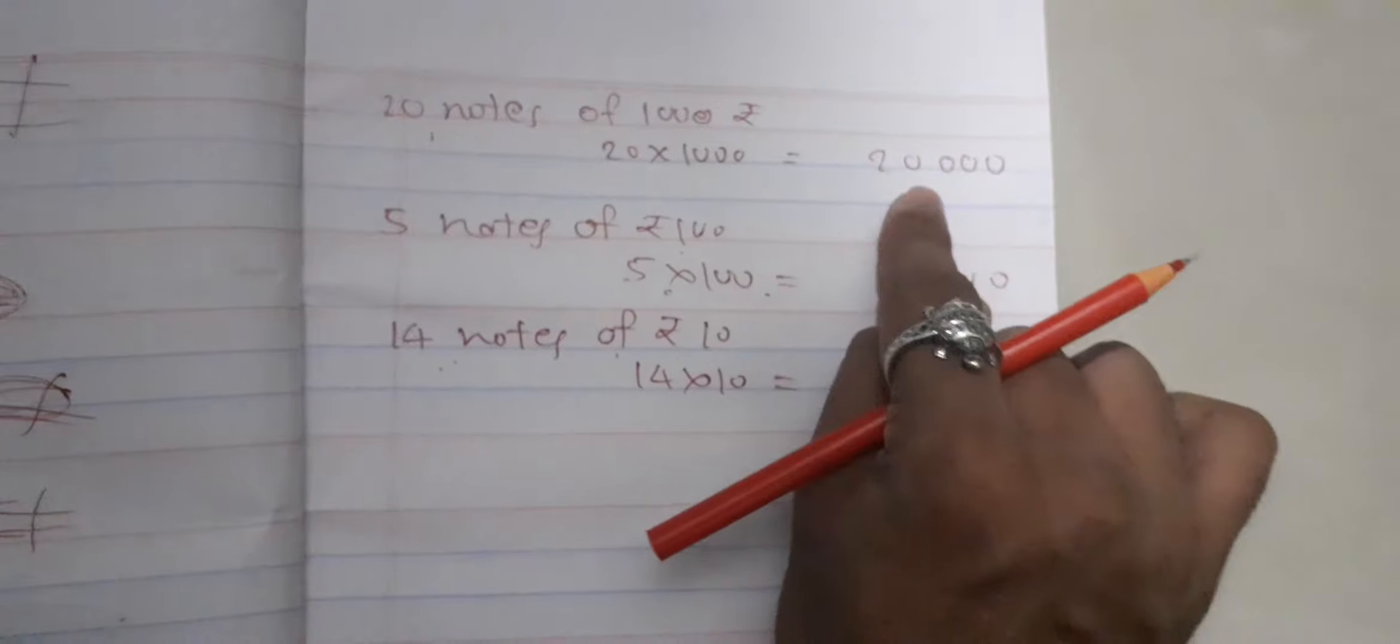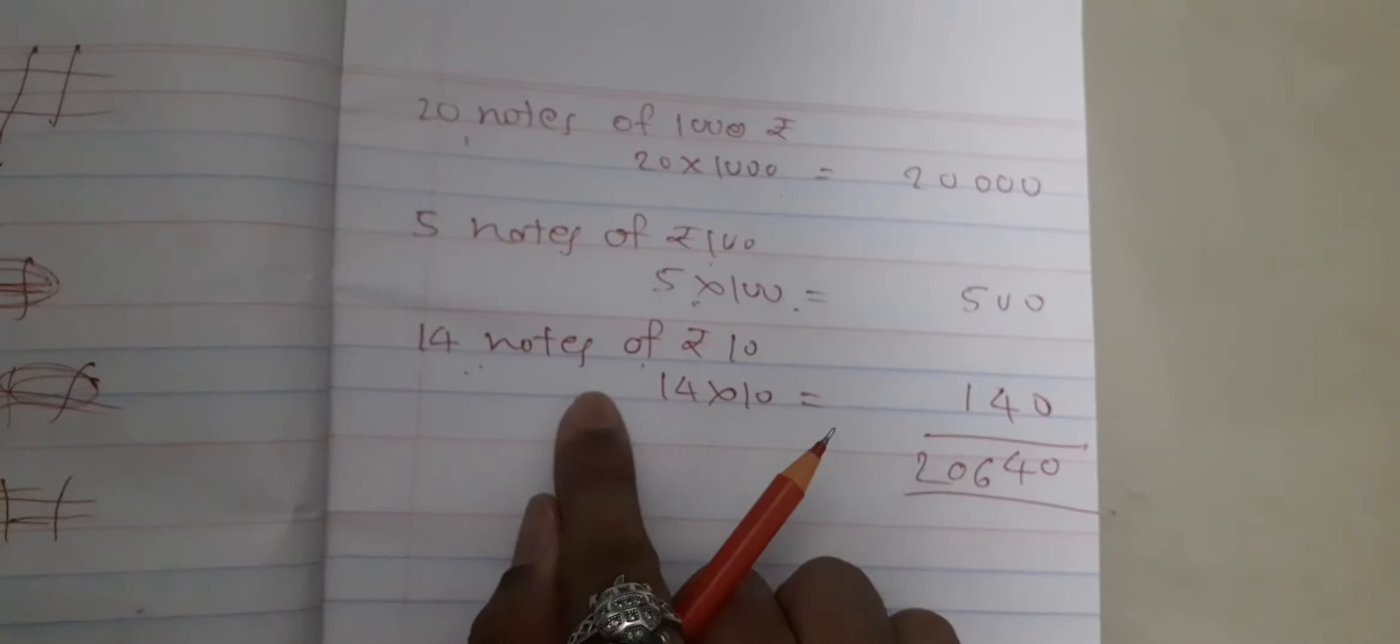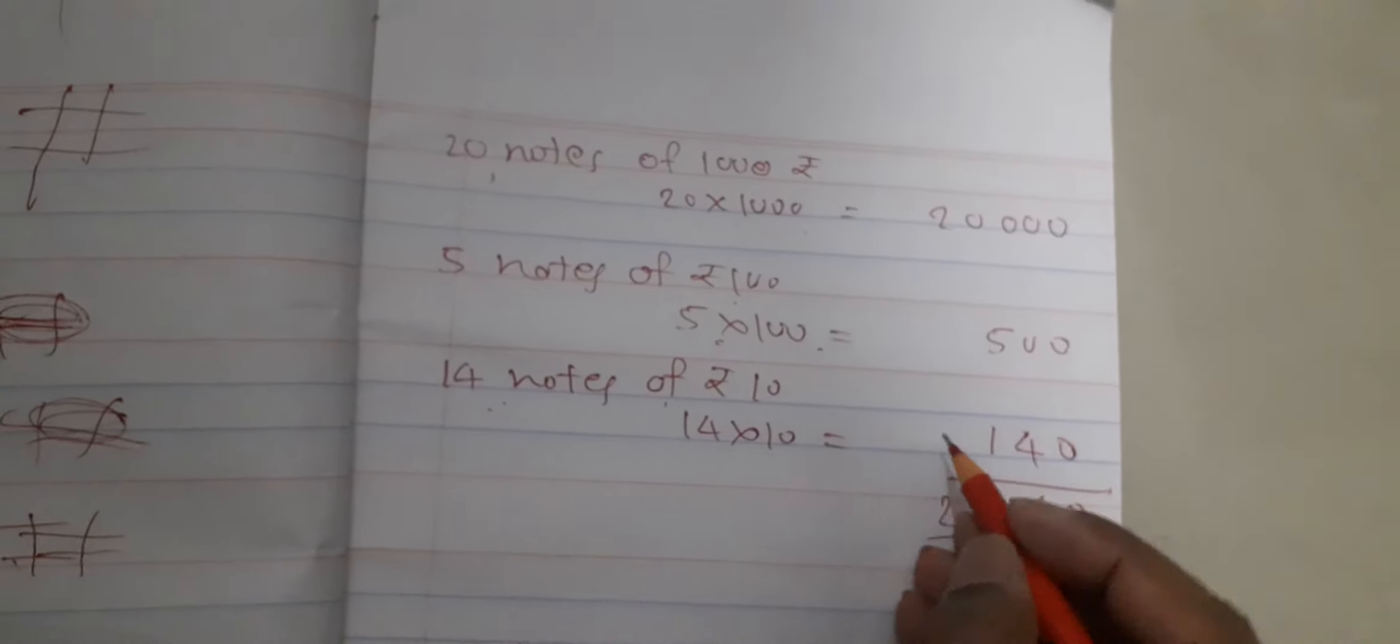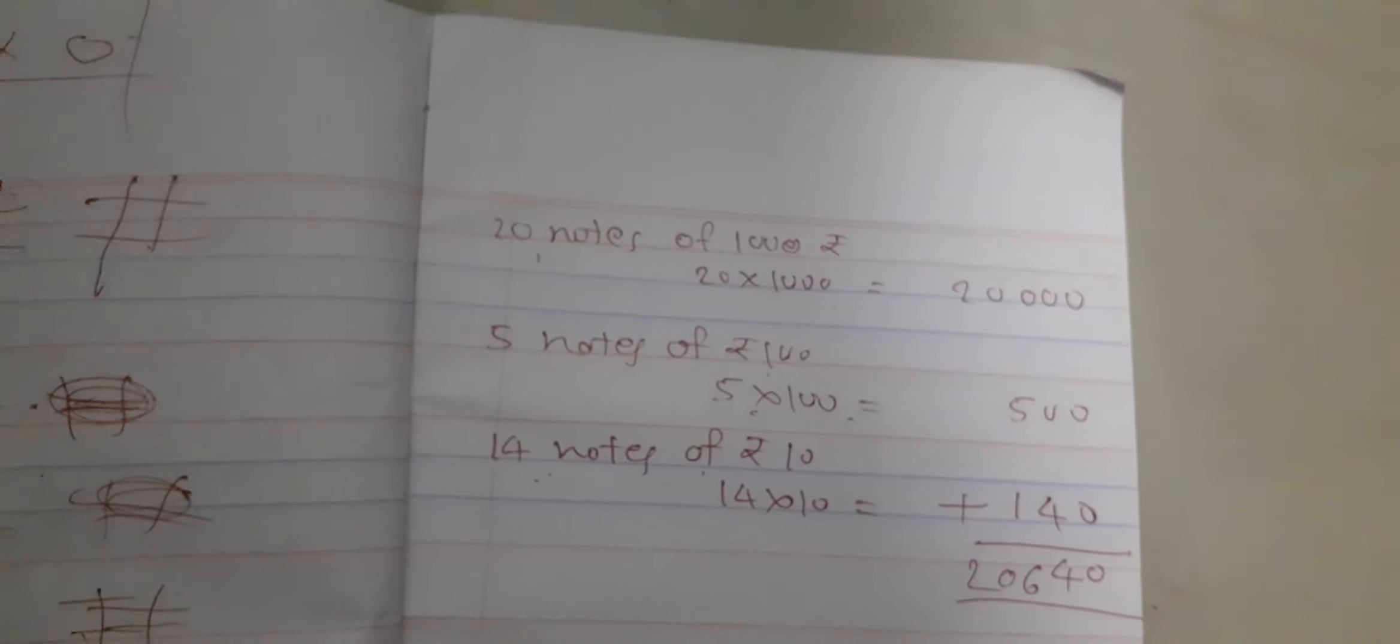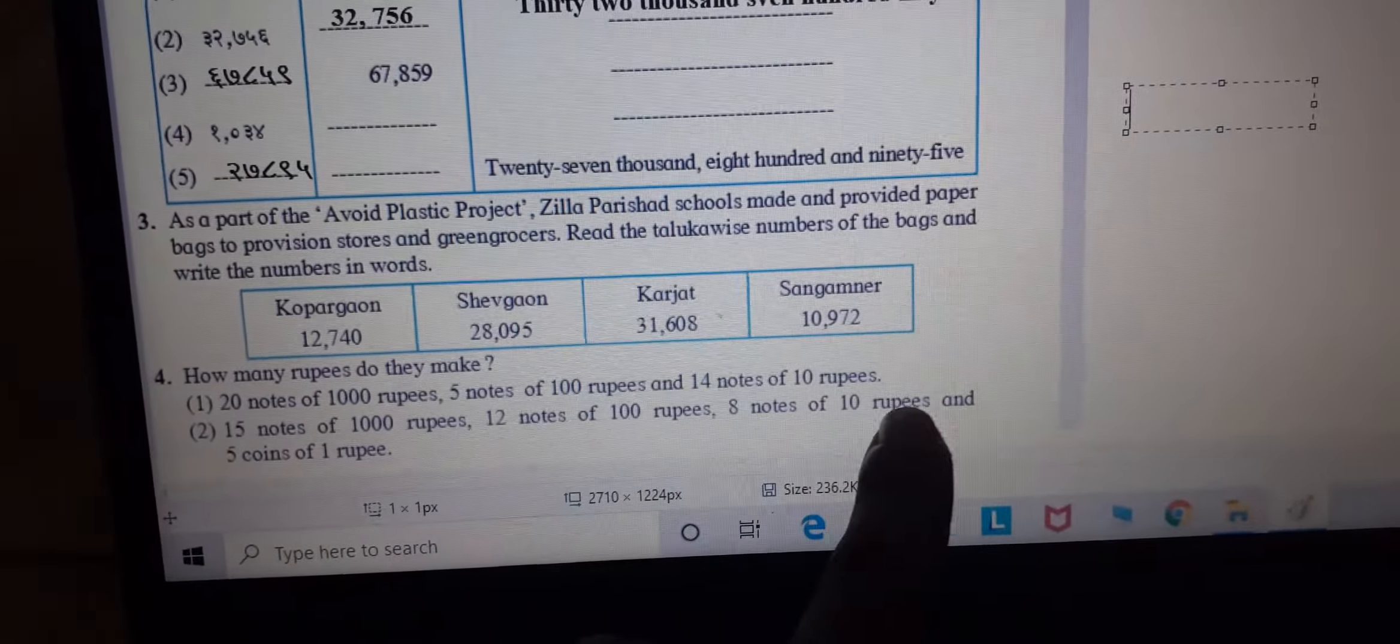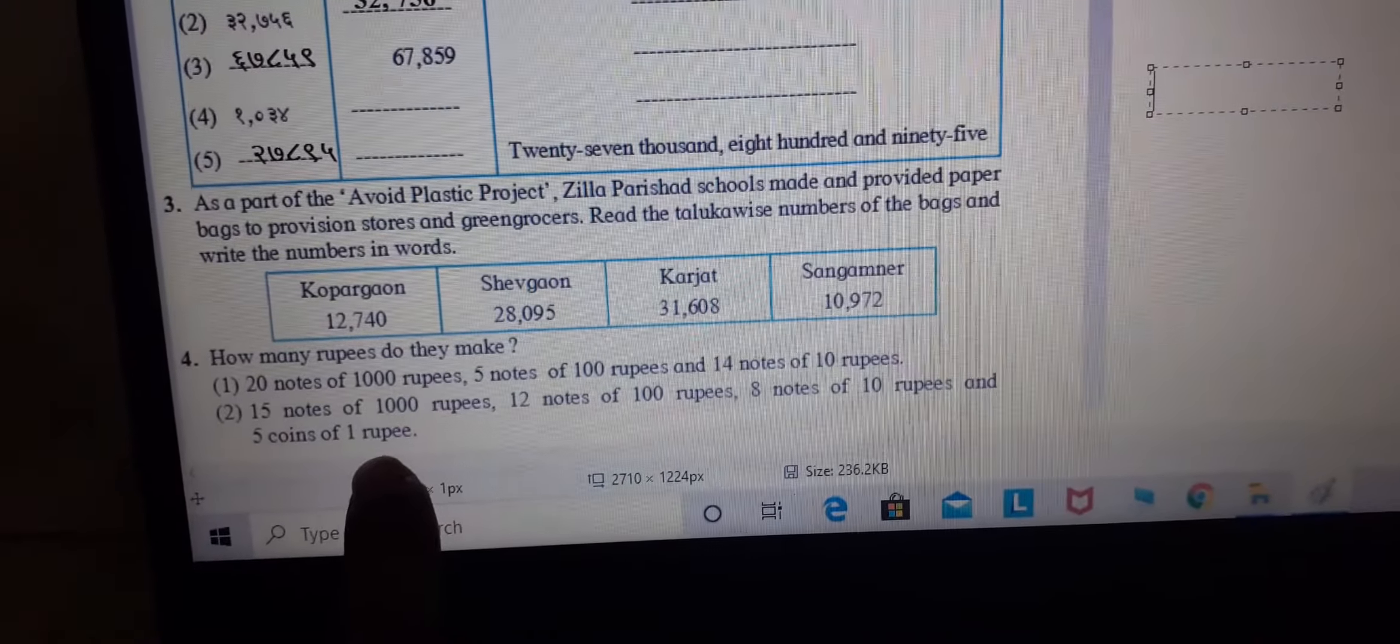Repeat: 20 notes of 1000 means 20 into 1000, 20,000. 5 notes of 100, 5 into 100 means 500. 14 notes of 10, 14 into 10 is how much will it come to you, 140. Next question is 15 notes of 1000, 12 notes of 100, 8 notes of 10 rupees and 5 coins of 1 rupee. Similar way first case solve the problem, then you can have doubts then you can have to ask them.